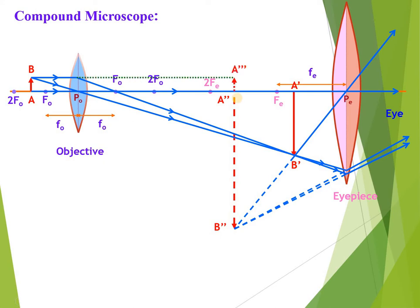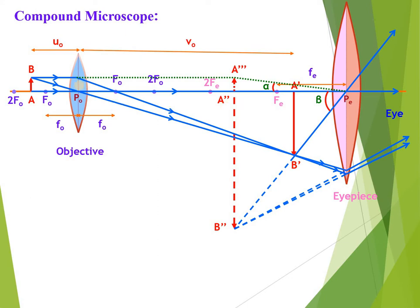Now let us understand magnifying power. Magnifying power is the ratio of the angle subtended by the final image at the eyepiece lens to the angle subtended by the object when both are seen from the least distance of distinct vision. The object is kept at distance vo from the objective, and fe is the focal length of the eyepiece. The angle formed by the final image is beta and if the object is at the least distance of distinct vision the angle at the optical center of the eyepiece is alpha, so magnifying power equals beta upon alpha.